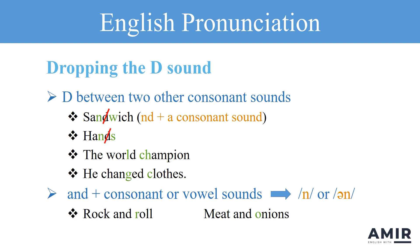We can also smoothly link one word, or sound, to the next one by dropping the D sound at the end of some words. For example, in the world champion, or he changed clothes, dropping the D sound helps the words connect more smoothly. In the word changed, the E is silent, which makes the D sound come between G and C.